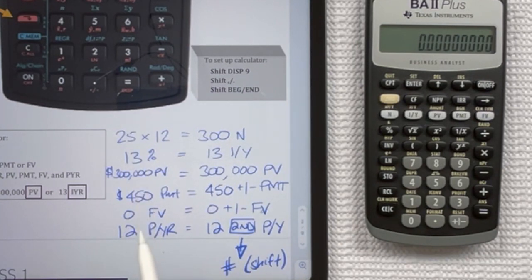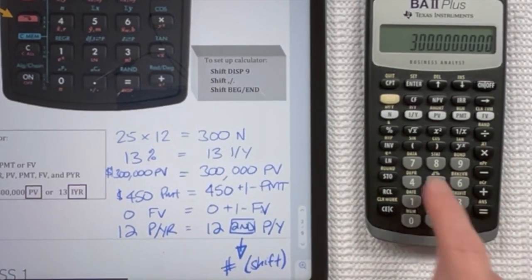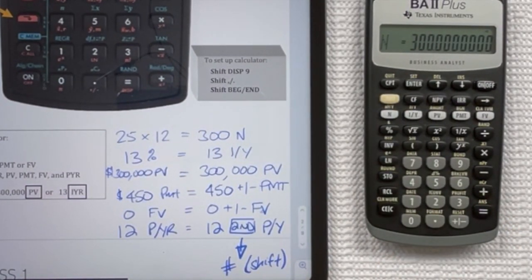If you had a 25 year amortization with monthly payments to enter for this calculation, you would multiply 25 times 12 equals, and then push N, and it would enter that 300 into the N for you.